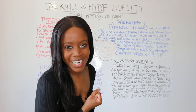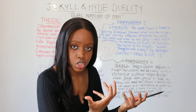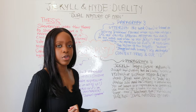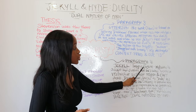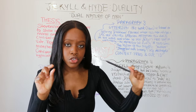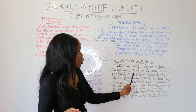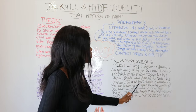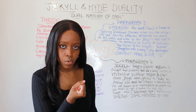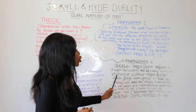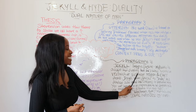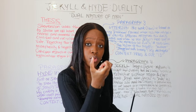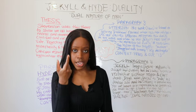Your second point: contrast Dr Jekyll - this very evolved, rich, wealthy, and respected man. When thinking about the theme of duality, talk about the fact that Dr Jekyll is used by Stevenson as a tragic figure because he refuses to accept his duality. He refuses to accept that he has an evil side, an animalistic side with animalistic desires. The character of Dr Jekyll is used by Stevenson to criticize what Stevenson saw as very restrictive Victorian religious ideas.